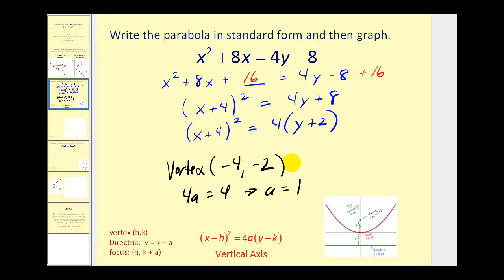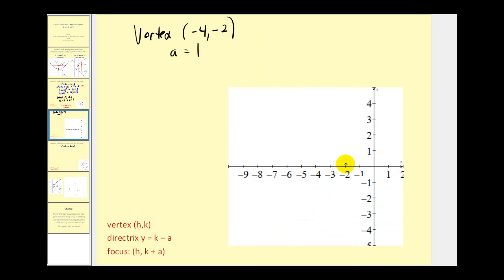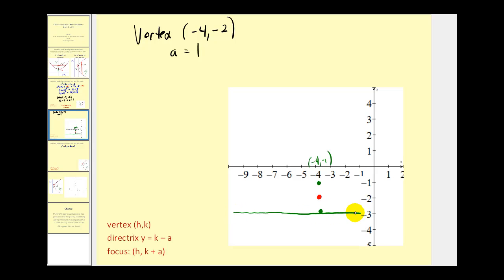Let's take this information over to the next screen and make a nice graph. The vertex is negative 4, negative 2 — that's one point on the parabola. Since this parabola opens up, the focus will be 1 unit up from the vertex, giving coordinates negative 4, negative 1. The directrix would be 1 unit below the vertex, which is the horizontal line y equals negative 3.